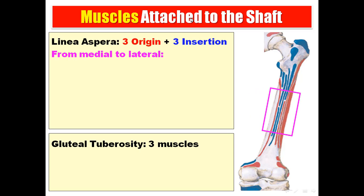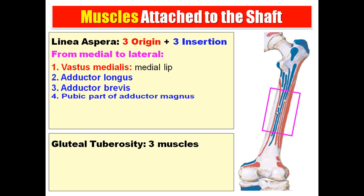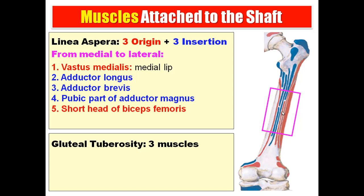Regarding muscles attached to the shaft, the linea aspera gives attachment to six muscles — three origins and three insertions — from medial to lateral: vastus medialis (medial lip), adductor longus, adductor brevis, adductor magnus (pubic part), short head of biceps femoris, and vastus lateralis (lateral lip).